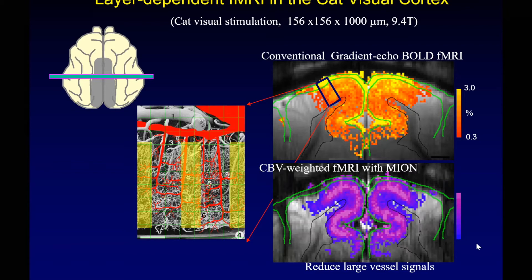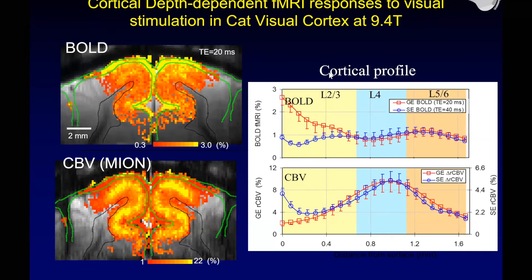We can look at this in more detail as a cortical layer profile. For BOLD fMRI you can see cortical depth with layers two, three, four, five, and six. When you use gradient echo versus spin echo, the spin echo is supposedly better — but you can see it is still quite broad. When you do the contrast agent study with gradient echo and spin echo measurements, you can see both show very sharp tuning into layer four. This is the input layer, and the map shows exactly where the high activity is.